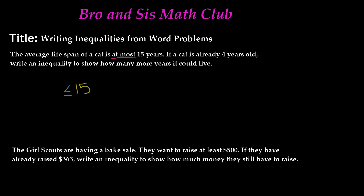So it's telling us at most 15, and we've written almost half our equation. It's also telling us the cat is already four years old, and we need to write an inequality to show how many more years it could live. If it's already four years old, we're going to add four to some number to get 15. We don't know that number, so we'll use a variable — a variable is just an unknown value in mathematics. We'll use the lowercase letter m.